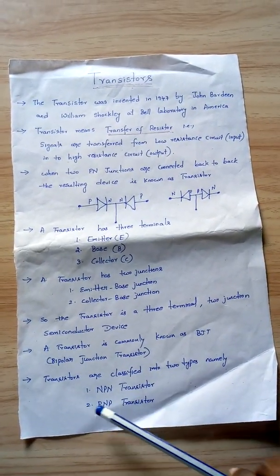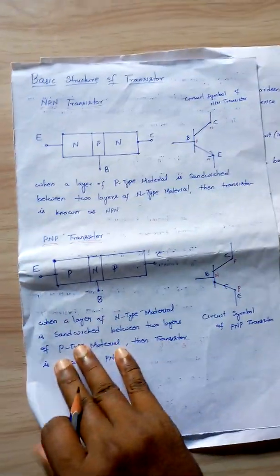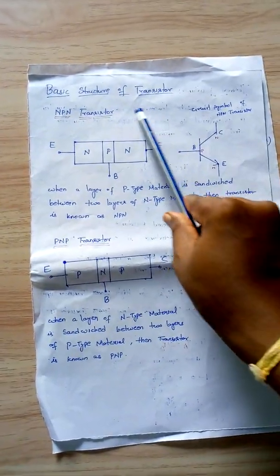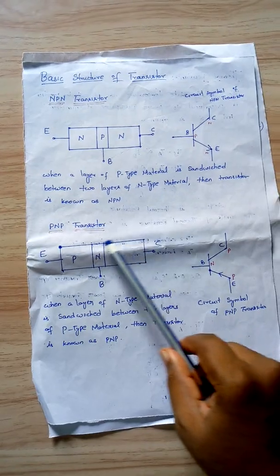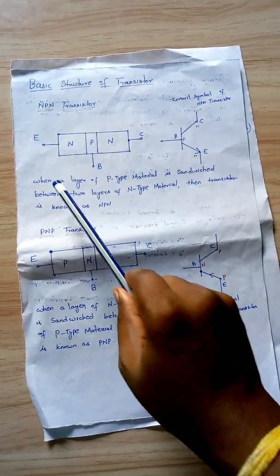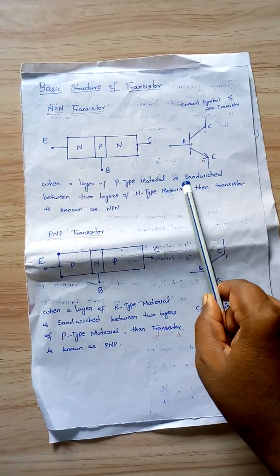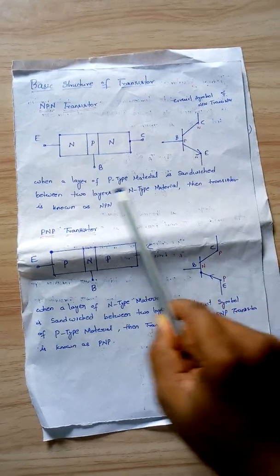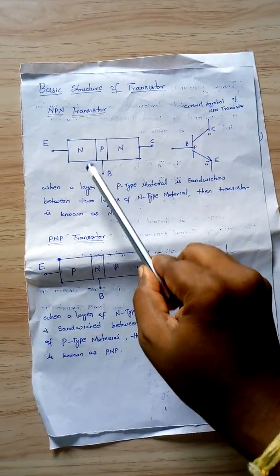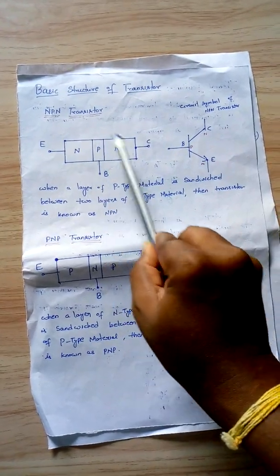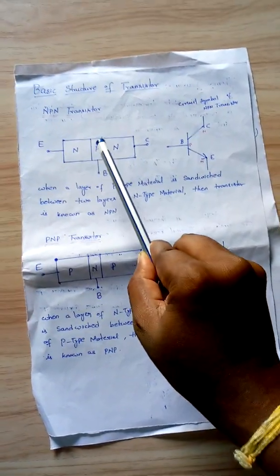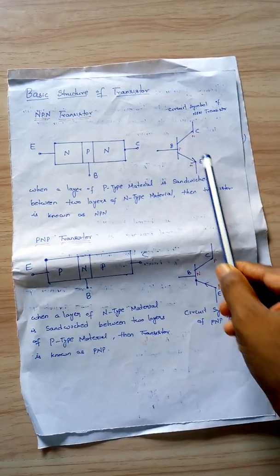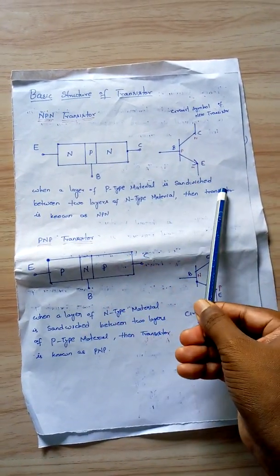This is the basic structure of an NPN transistor and this is the basic structure of a PNP transistor. When a layer of P-type material is sandwiched between two layers of N-type material, the transistor is called an NPN transistor. This is the circuit symbol of an NPN transistor, where the arrow mark indicates the direction of current flow.